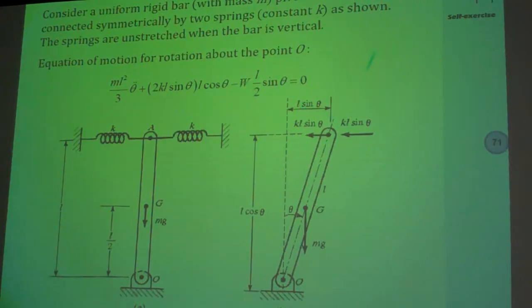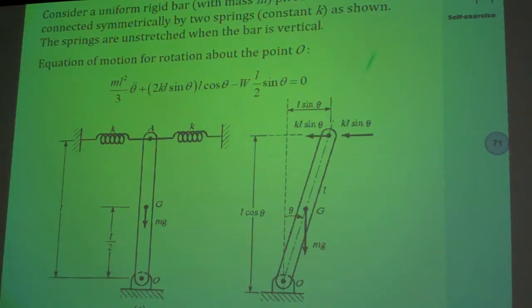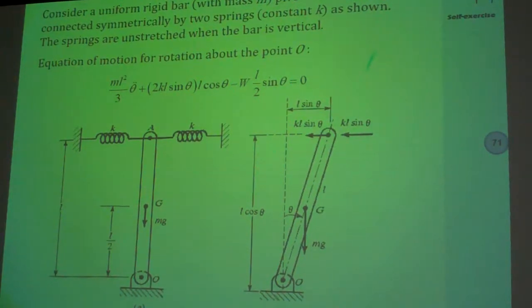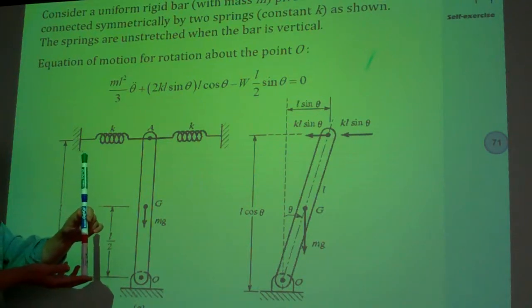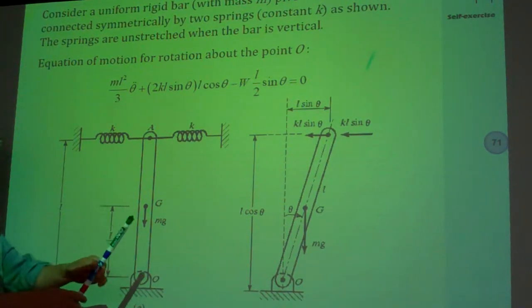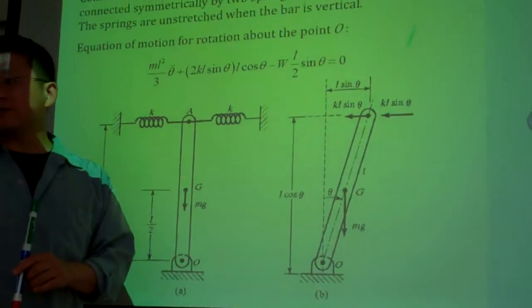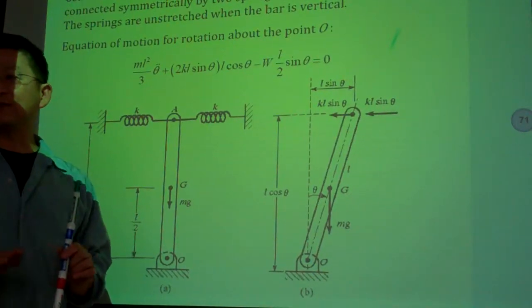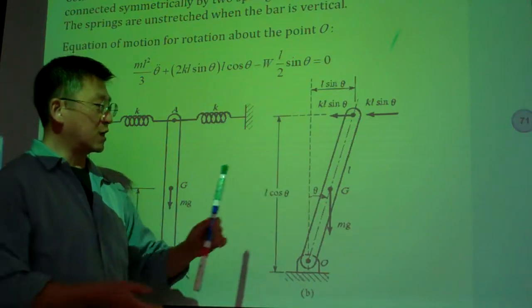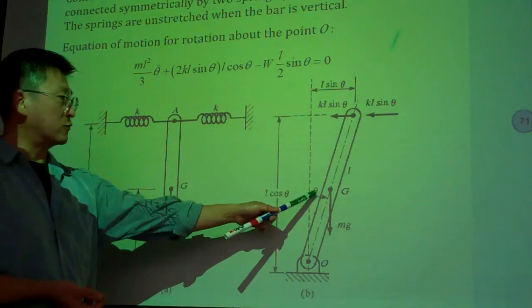For this question, first of all we have to formulate the equations of motion. We assume we tilt it a little bit by a small angle. Again, for vibration 408, we consider everything linear, so we consider this kind of perturbation is very small.